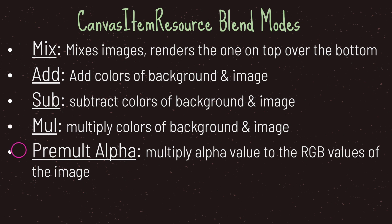And lastly you have pre-multiply alpha. With the blend mode set to pre-multiply alpha, you will multiply the alpha values on your image to the RGB values of that image. The reason for this is you get a better looking image when you change the opacity of your image — the opacity being the alpha value.